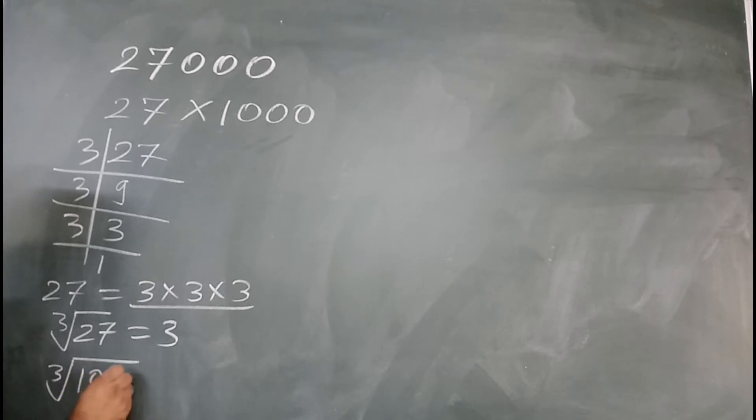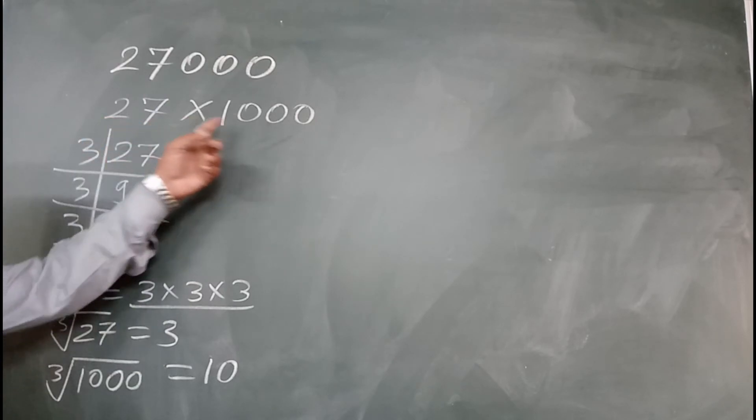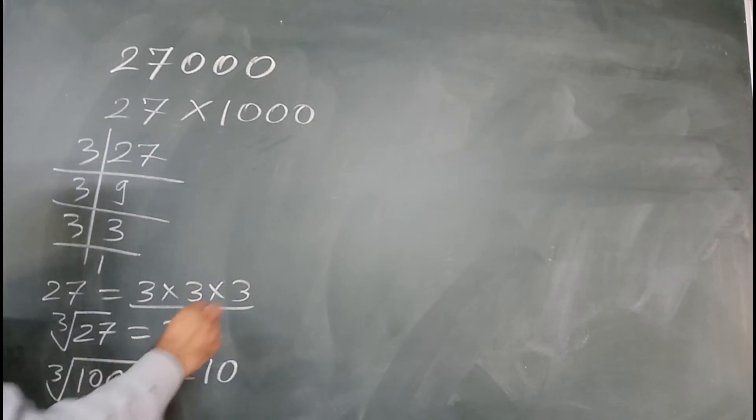Then you multiply both numbers. Because we have 27 times 1000, it will be 3 times 10, which equals 30.